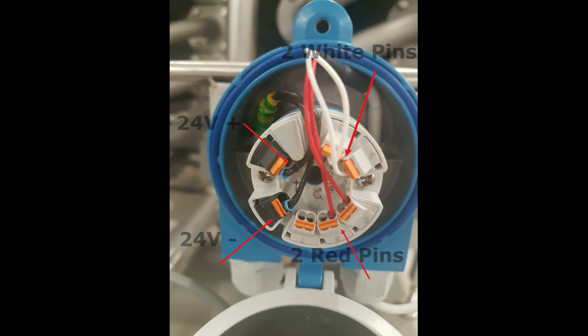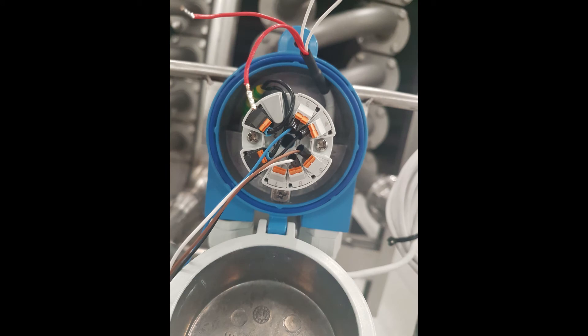We disconnect the surface probe pins and use our own pins connected to the transmitter from our Beamex calibrator. As you can see with the circle.